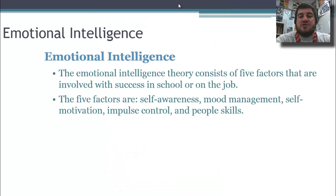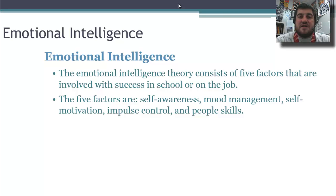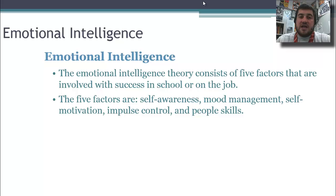Finally, we have emotional intelligence, a theory that came about in the 90s. It addresses why some people who don't seem traditionally intelligent still succeed — because they have emotional intelligence associated with success in school or on the job. The components are self-awareness, mood management, self-motivation, impulse control, and people skills, and those all make up your emotional intelligence.